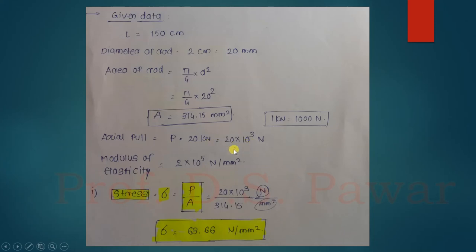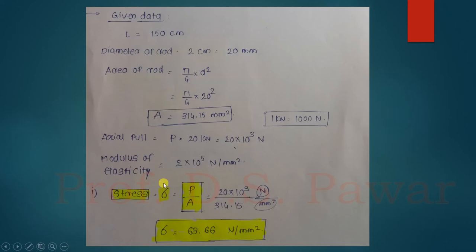Based on the given data, we first calculate the stress. The stress formula is: stress (σ) = Force per unit area = P/A. Substituting the values — P = 20×10³ N and A = 314.15 mm² — we get the stress value as 63.66 N/mm². So I obtained the value of stress using the formula σ = P/A.